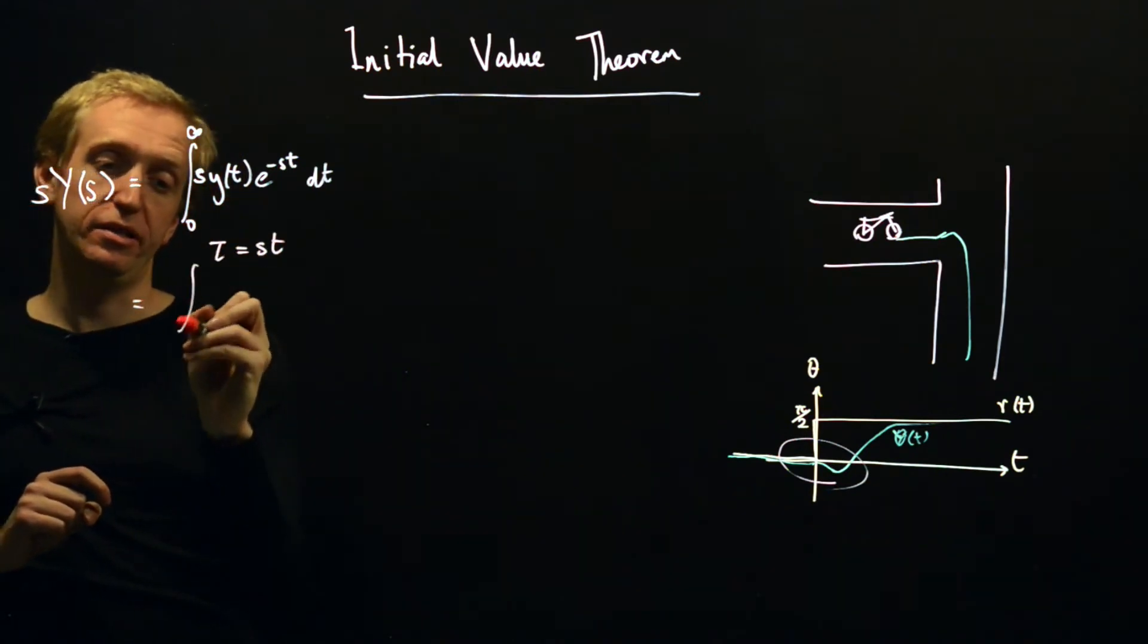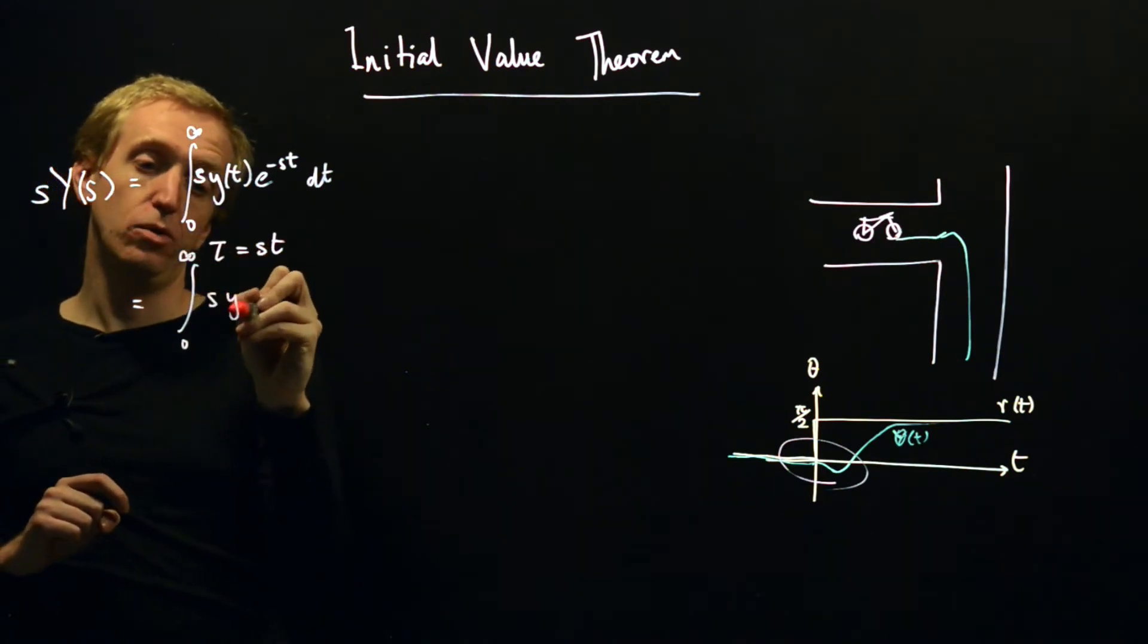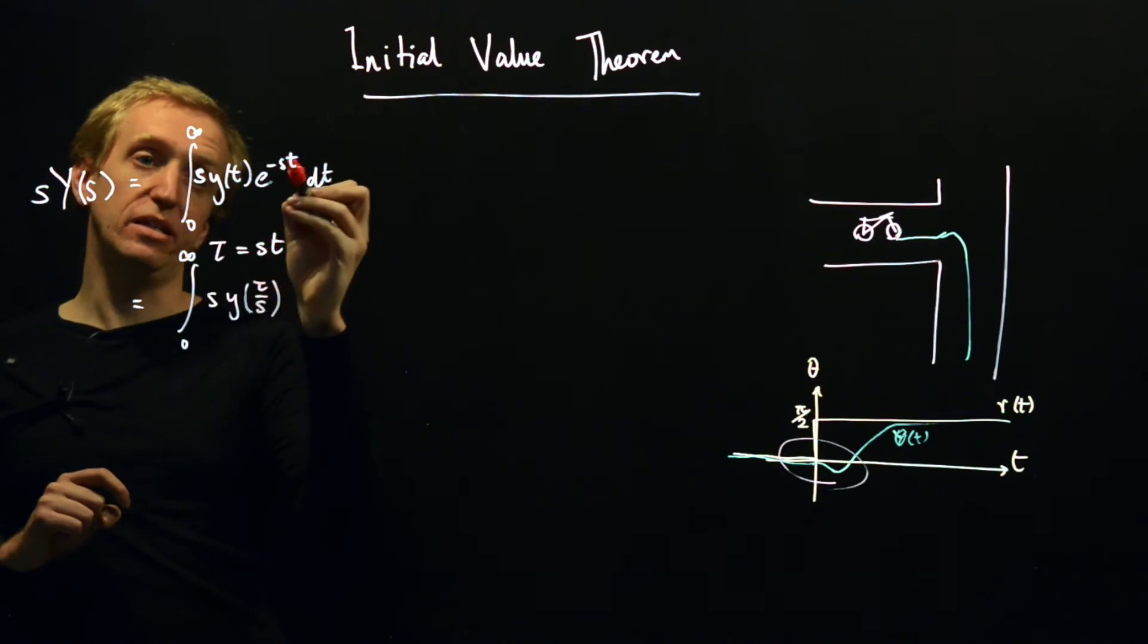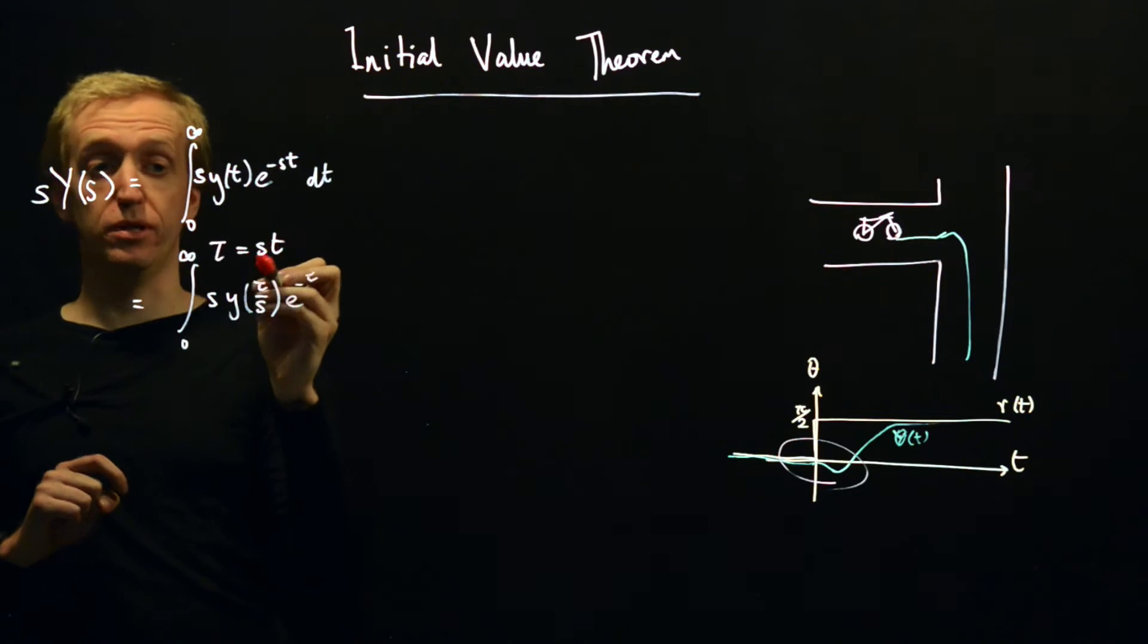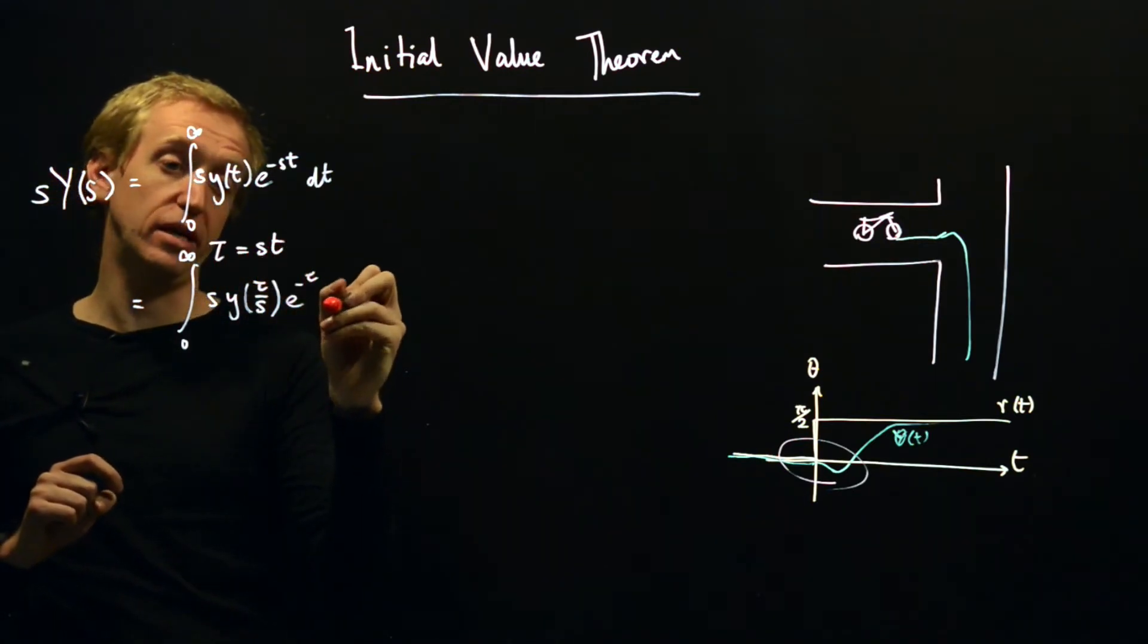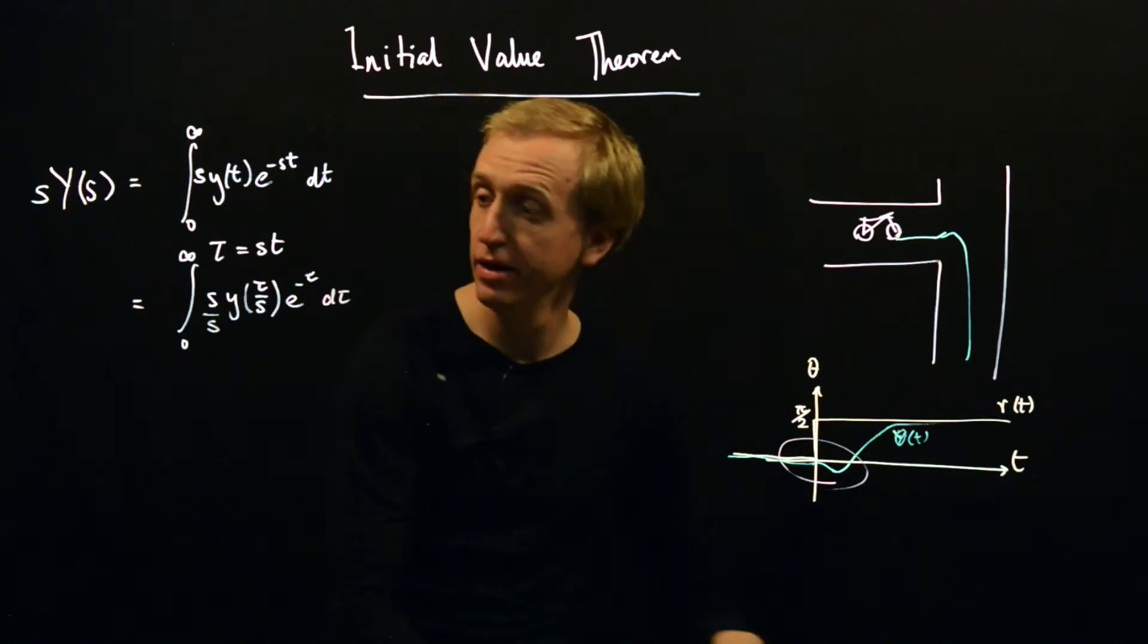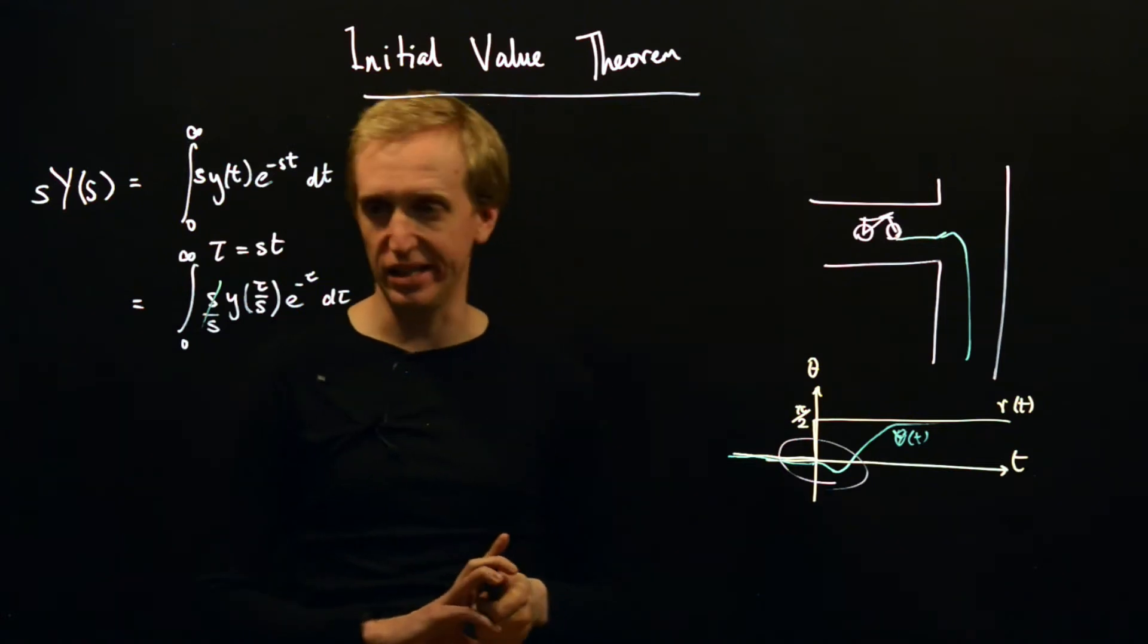I'm going to make a change of variables. I'm going to invent a new variable τ and it's going to be equal to st, and I'm just going to substitute that in and see what happens. So this integral now becomes zero to infinity, and I'm going to have s·y, and then t is equal to τ/s. e^(-st) is e^(-τ), and dt is dτ/s. Now you see the motivation for putting in this multiplication factor here. These s's cancel out.